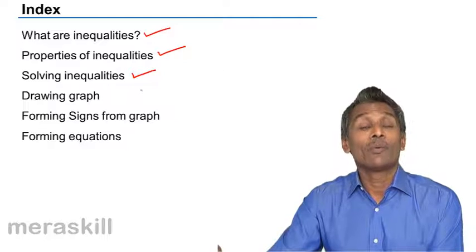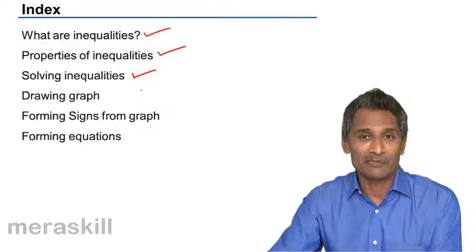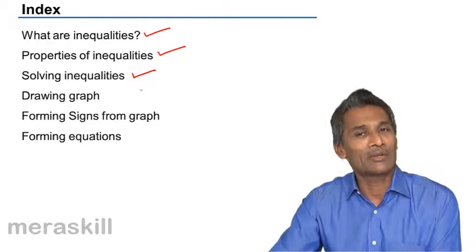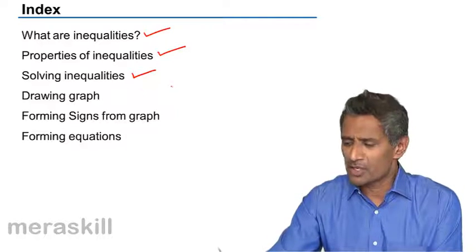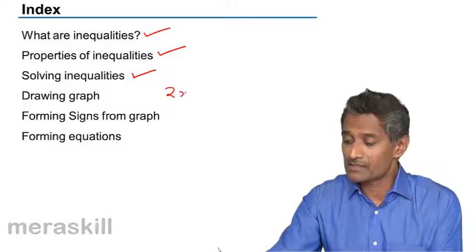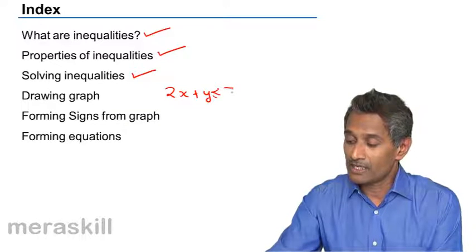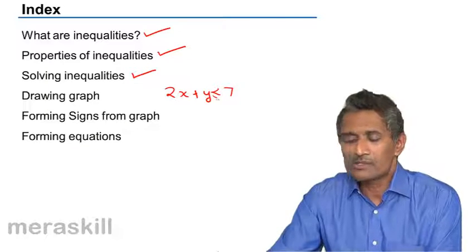Now, we all know visual appeal is the best appeal. When you talk about 2x plus y is less than or equal to 7, it does appear a little strange. When you say this, how does this look like?